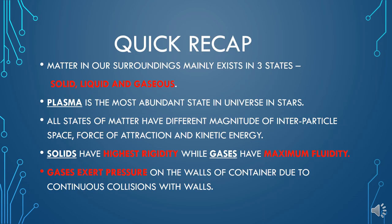To recap: matter in our surroundings mainly exists in three states — solid, liquid, and gas. Plasma is the most abundant state in the universe. All states of matter have different magnitudes of particle characteristics. Solids have the highest rigidity, while gases have maximum fluidity. Gases exert pressure on the walls of a container due to continuous collisions. Hope everything is clear. Now you are able to solve the assignment. Have a good day.